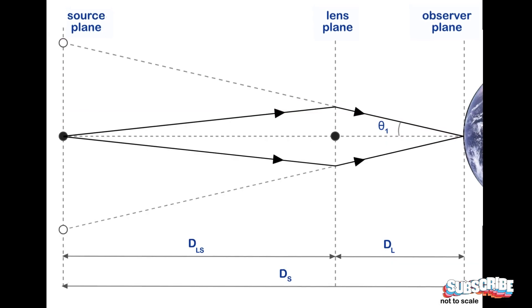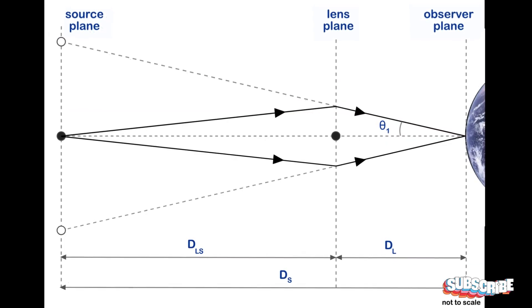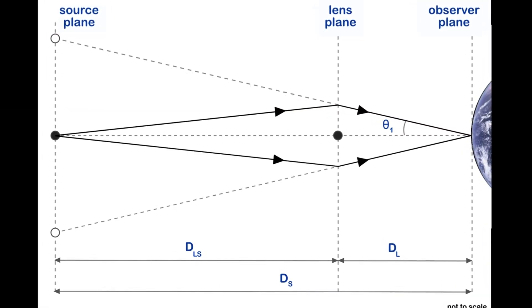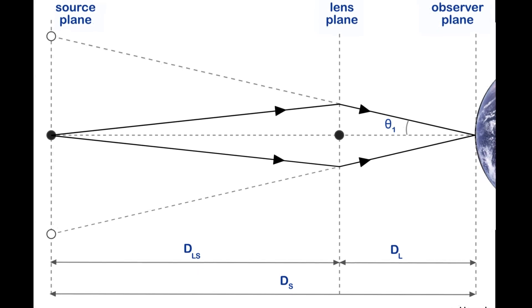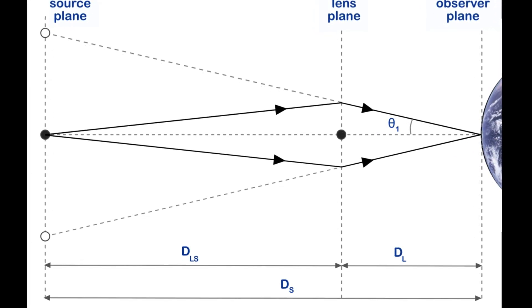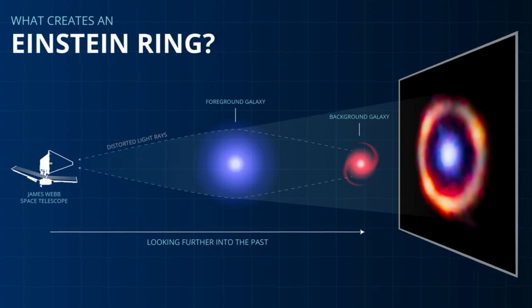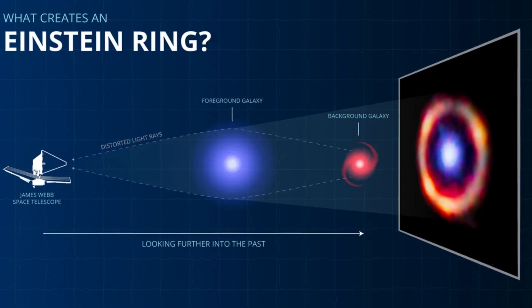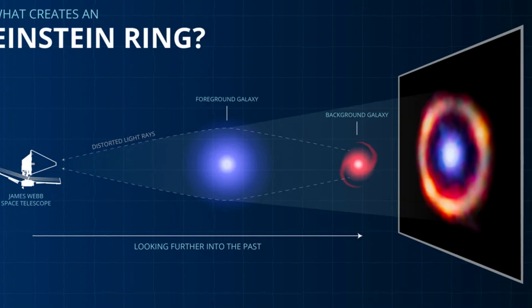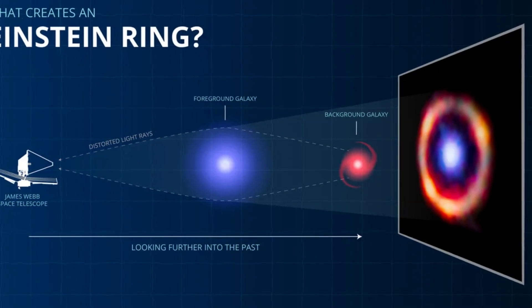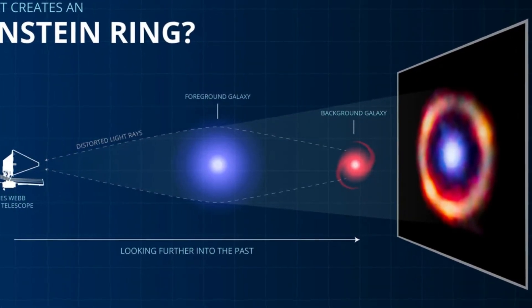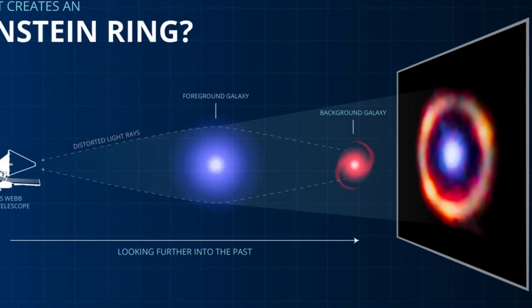An Einstein ring, also known as an Einstein-Trolsen ring or Trolsen ring, is created when light from a galaxy or star passes by a massive object en route to the Earth. Due to gravitational lensing, the light is diverted, making it seem to come from different places. If source, lens, and observer are all in perfect alignment, the light appears as a ring.